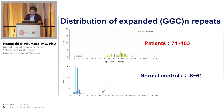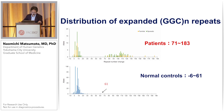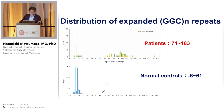Using this method, we checked all the repeat expansions in the family and sporadic cases. We found that the patient group showed 71 to 183 repeat expansions, while normal controls were mostly less than 61 repeats. The 61-repeat control individuals might be asymptomatic carriers, though we cannot confirm this without reaching these controls. If we exclude the 61-repeat cases, most normal repeats are less than 30.